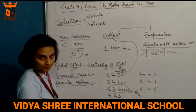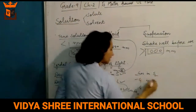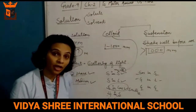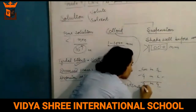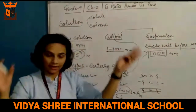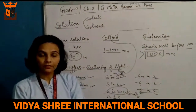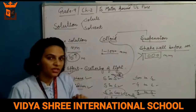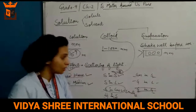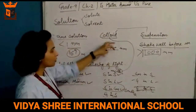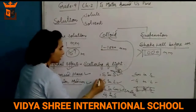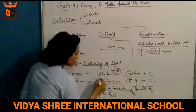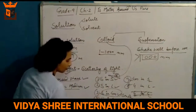Gas in solid, gas in liquid, and gas in gas — that would be nine combinations, but gas in gas (like air, which is a homogeneous mixture) does not come under colloids. So there are eight types of colloids. Air is a homogeneous mixture, not a colloid.